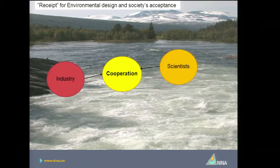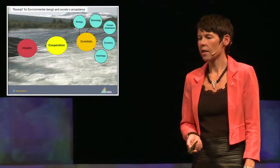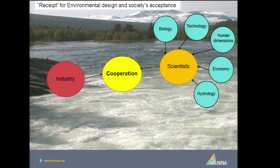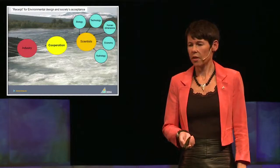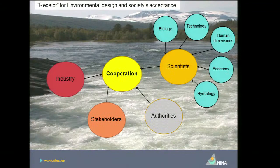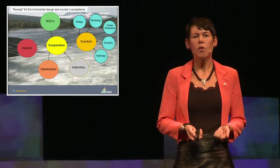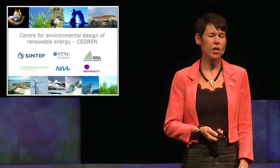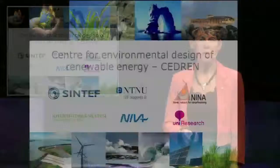One word first: cooperation. It's important to have good cooperation. We have good cooperation today between the industry and the scientists. When I talk about scientists, several disciplines are necessary if you are going to find the best way to produce renewable energy: biologists, technologists, human scientists, economists, and hydrologists. But there are several other parties you have to cooperate with — very importantly, the stakeholders. You also have to include the authorities and the NGOs. This is crucial. We have a very good platform for this work in Norway called CEDREN, where we work on environmental design projects and deal with human dimensions.